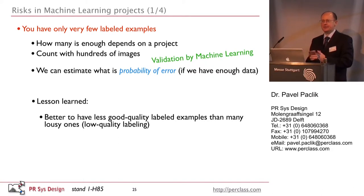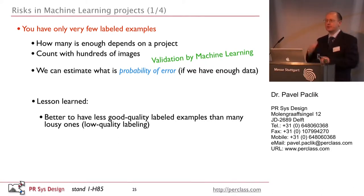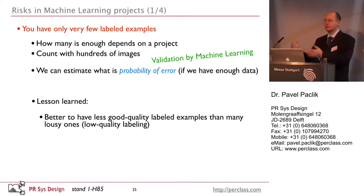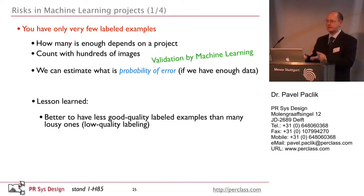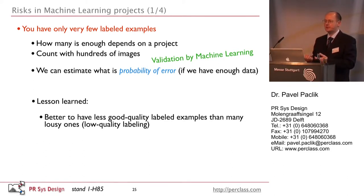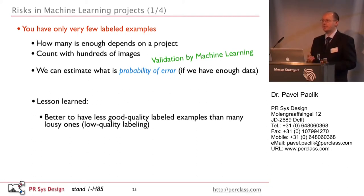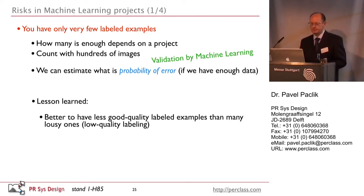This is somewhat against the mainstream — what you see in the media is Google mining millions of images to learn what a cat looks like. But I believe that for industrial applications where you really need performance, you should prioritize good quality labeling first.